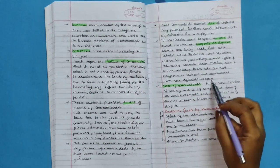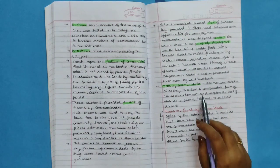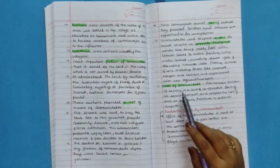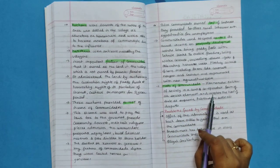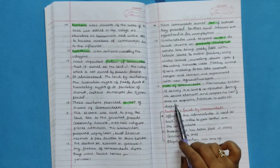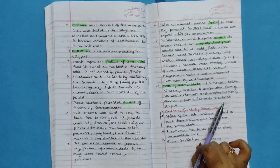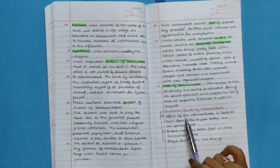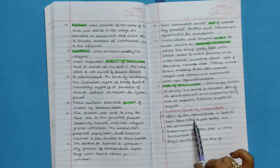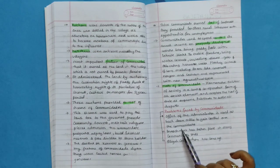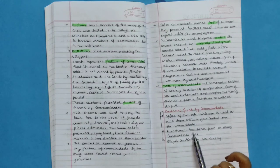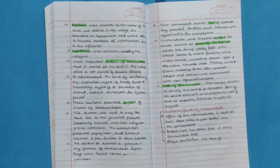Motto of Comunidade: harmonious existence of society in sort of cooperative form of all social elements and accepting the head of the state as supreme arbiters to settle all disputes. Problem faced by Comunidade: office of the administrator is used as backdoor entry to gain control over the Comunidade. Encroachment has been placed in many Comunidade lands. Illegal construction has come up.